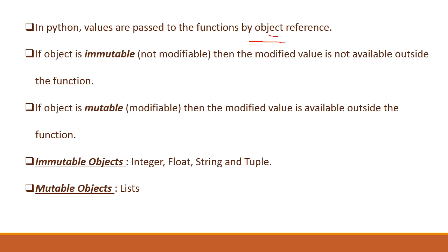But in case of Python, we have pass by object reference. And in case the object is immutable—immutable means you cannot modify it—then that modified value is not available outside the function body.